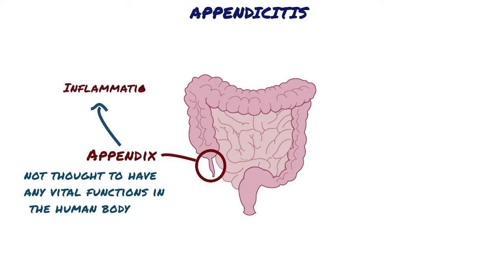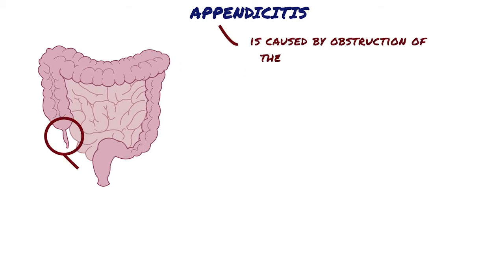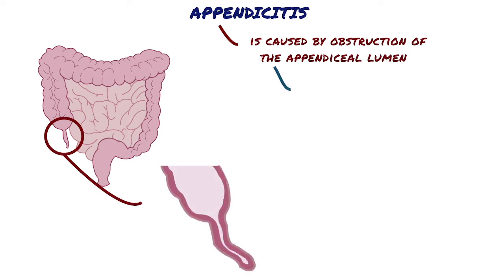The inflammation of the appendix is known as appendicitis and is a common cause for acute severe abdominal pain. Appendicitis is caused by the obstruction of the appendiceal lumen. The most common causes of luminal obstruction include lymphoid hyperplasia.